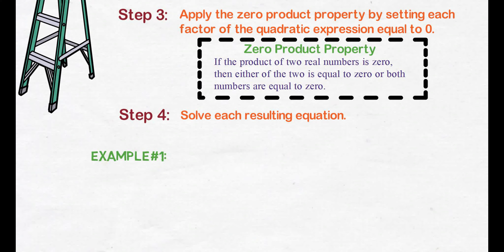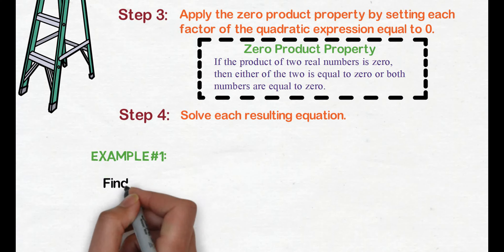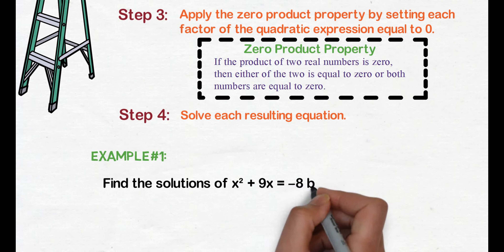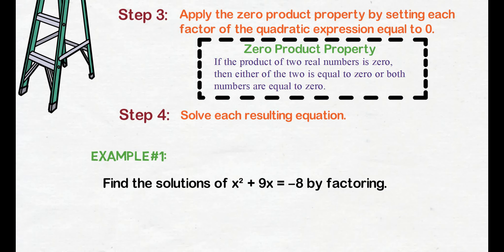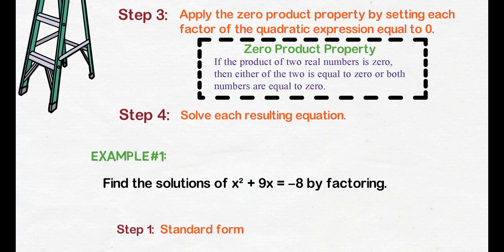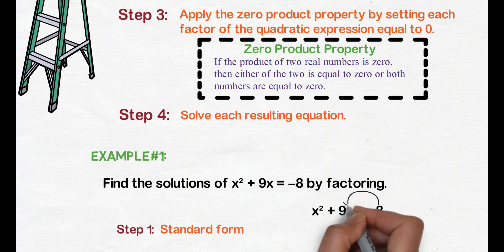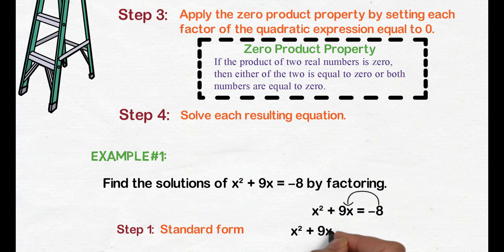Example number 1: find the solutions of x squared plus 9x equals negative 8 by factoring. Step 1, transform the quadratic equation into standard form. Transpose negative 8 to the left side of the equation. We get x squared plus 9x plus 8 equals 0.